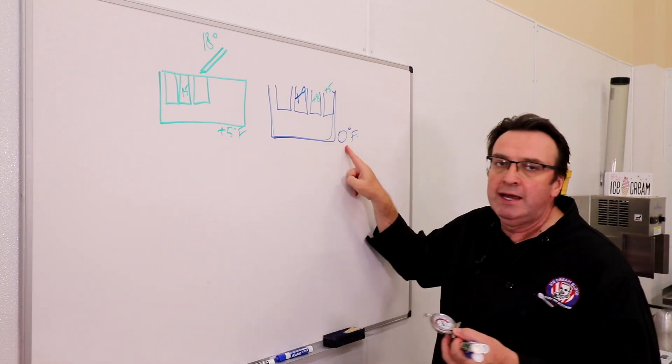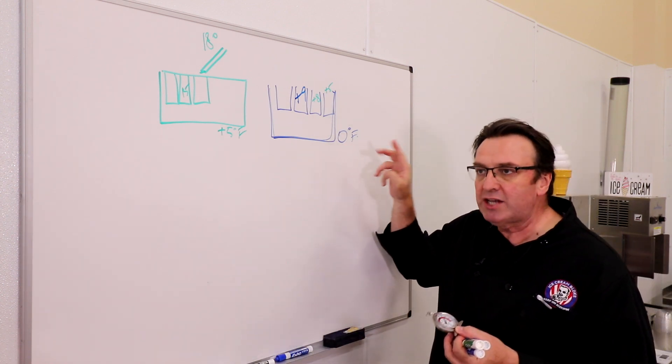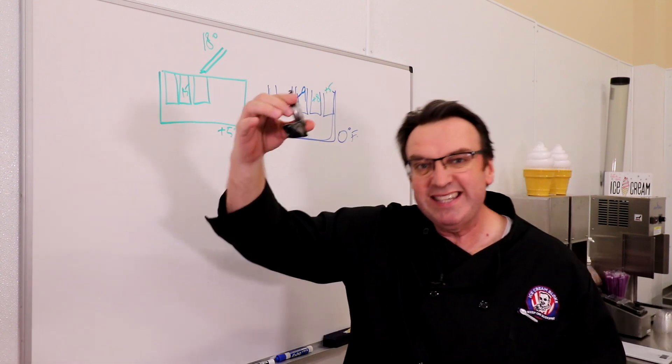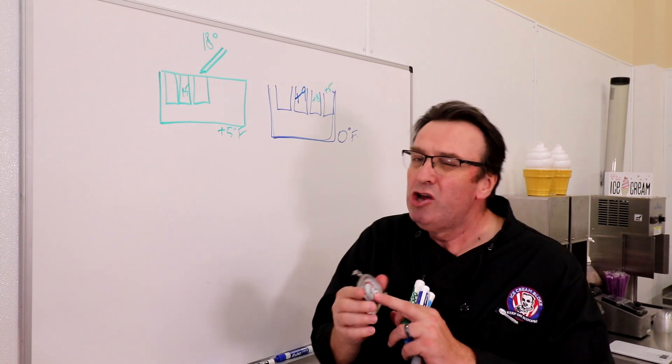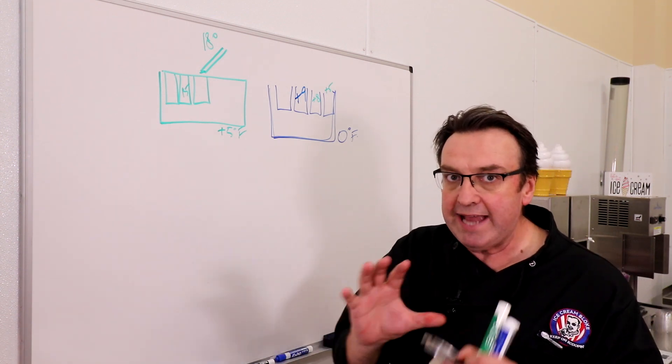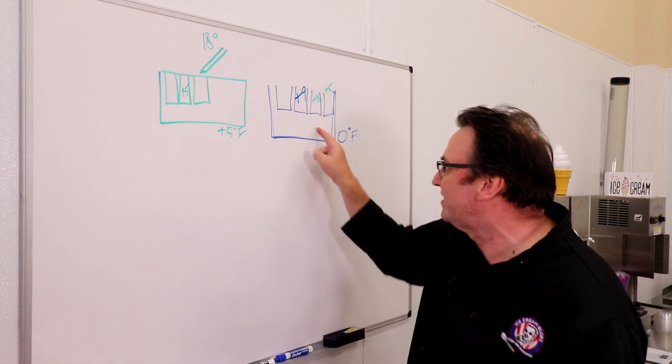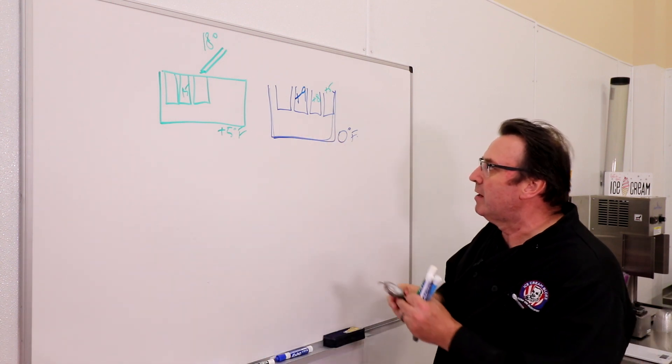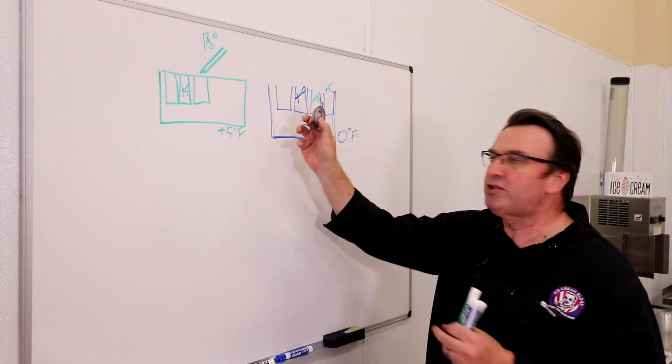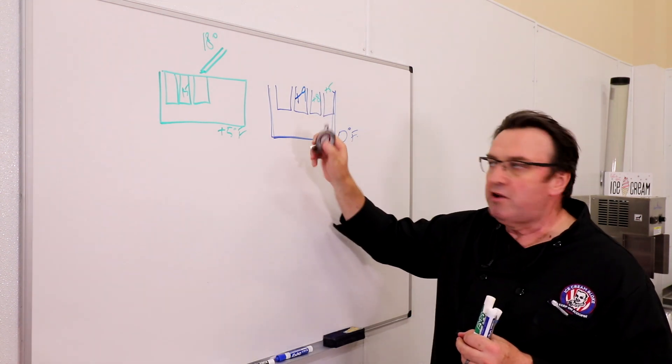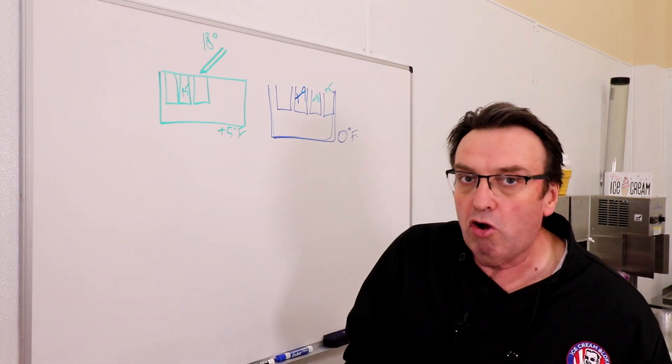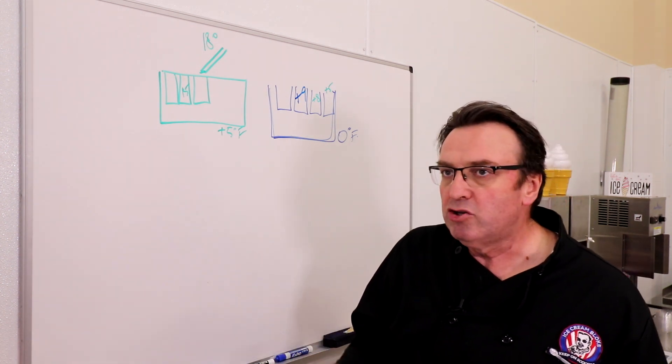So if you've got your dipping cabinet temperature set at zero, this sitting in the bottom of your dipping cabinet should pretty well reflect what the air temperature is inside the dipping cabinet. If there is a disparity between zero and this reads plus five, then I would get your thermostat calibrated, because maybe you're thinking that you're holding product at a certain temperature and you may not be.